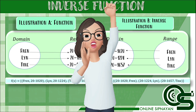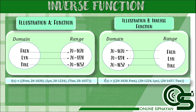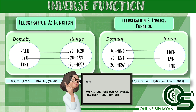Now that you already know how to determine whether relations are one-to-one functions, we are going to proceed discussing finding the inverse of one-to-one functions. Each student has their own respective student number. The domain represents the names of the students while the range is their student number. Illustration A represents the original function, denoted as f of x or y. Illustration B represents the inverse function of illustration A, denoted as f inverse of x or y inverse. You can only find the inverse of the original function if it is a one-to-one function.